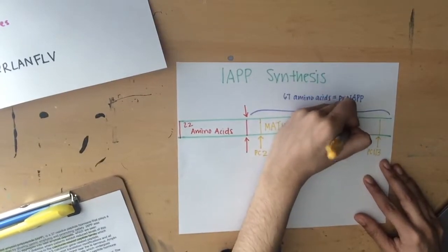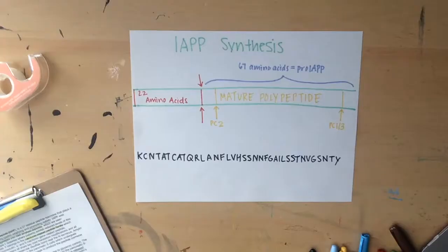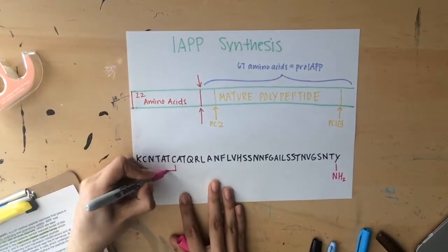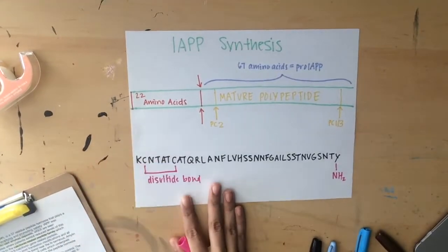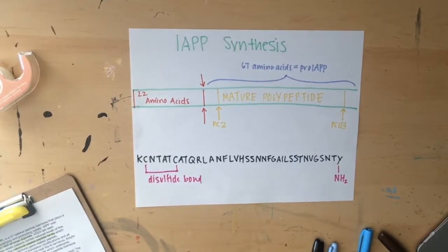Pro-IAPP is processed in the Golgi and in the insulin secretory granule. The polypeptide sequence is as follows. Amidation of the C-terminus follows synthesis and is a multi-step process. The C-terminal cleavage leaves a glycine-lysine-arginine tripeptide sequence as the new C-terminus.